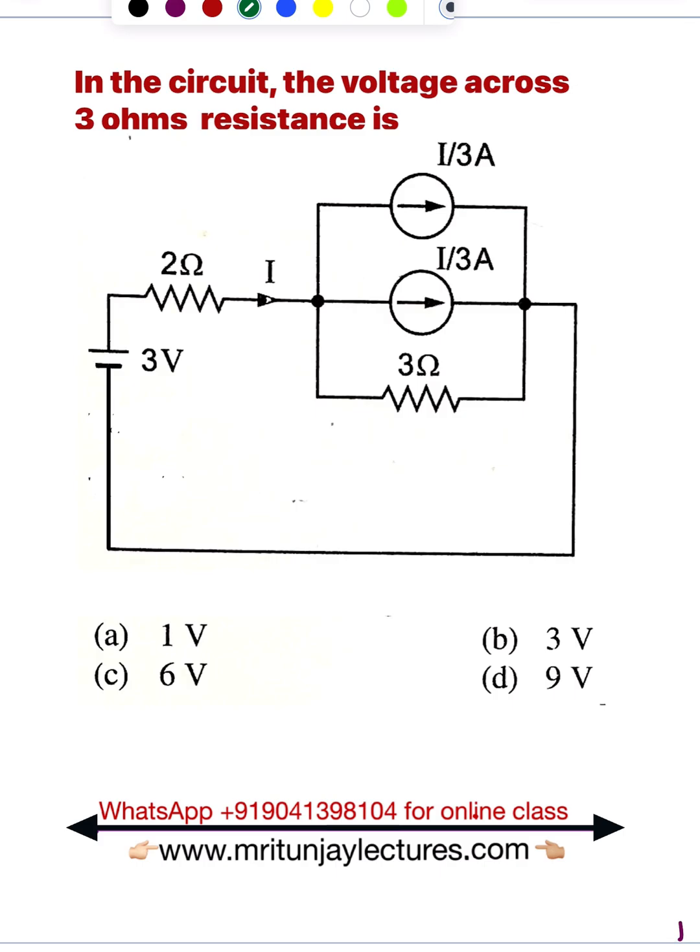If you want the voltage in 3-ohm resistance, simply if you determine current in this branch, then you can say that I times 3 ohm gives the voltage. So first of all, focus on what is the current in this branch.